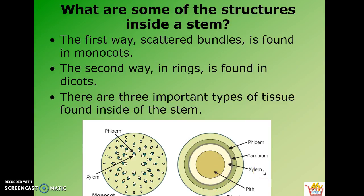There are three types of tissue inside the stem I want you to be aware of. Today, when we did the activity, most of you had no trouble locating the pith — I just love to say that word. If you look straight down into the stem, you can see the center core is called the pith.